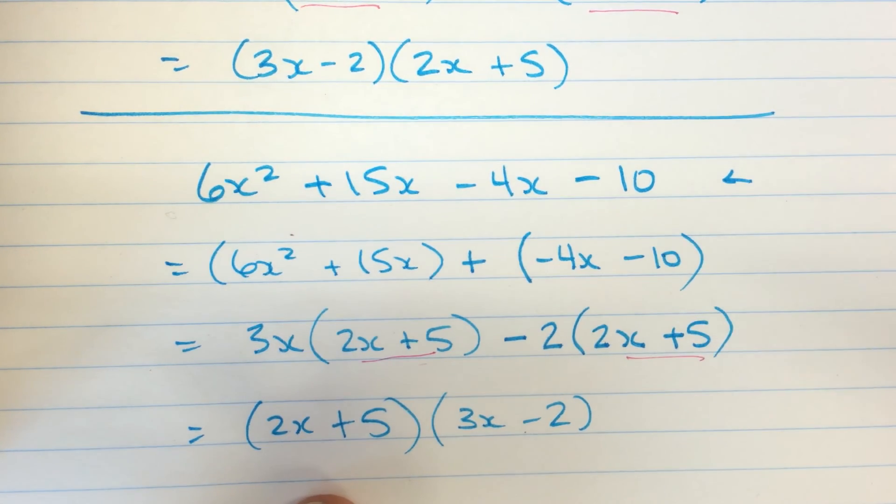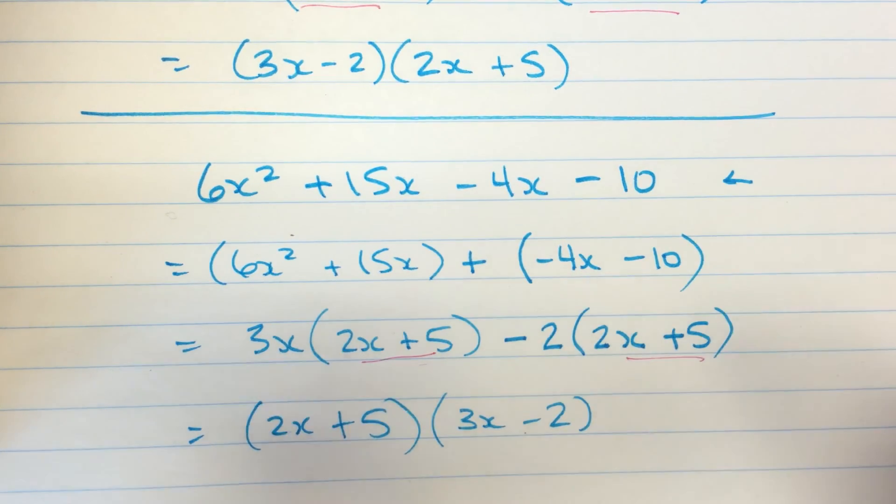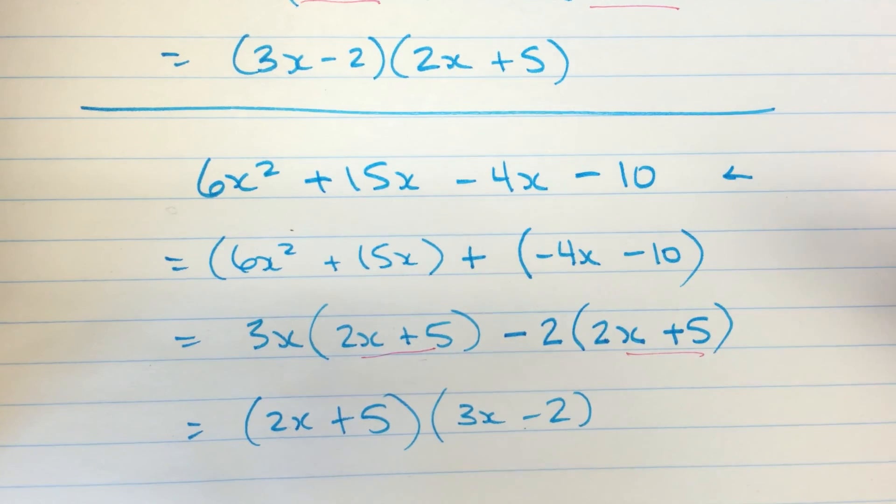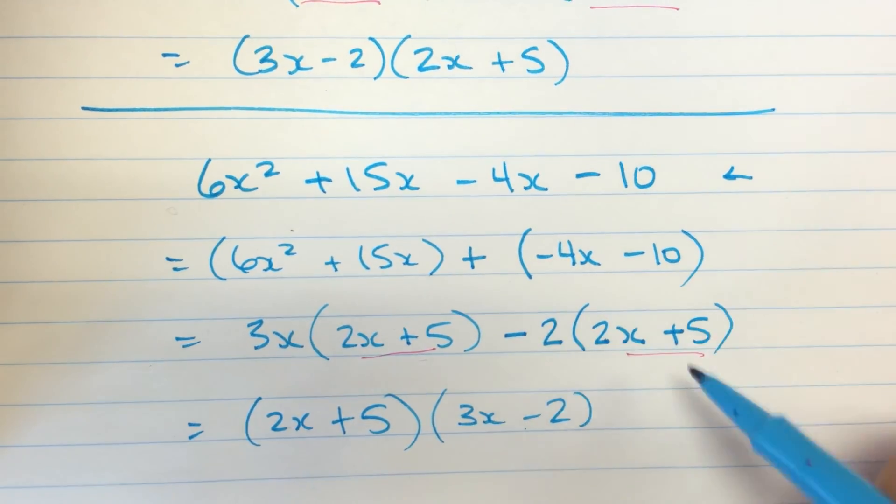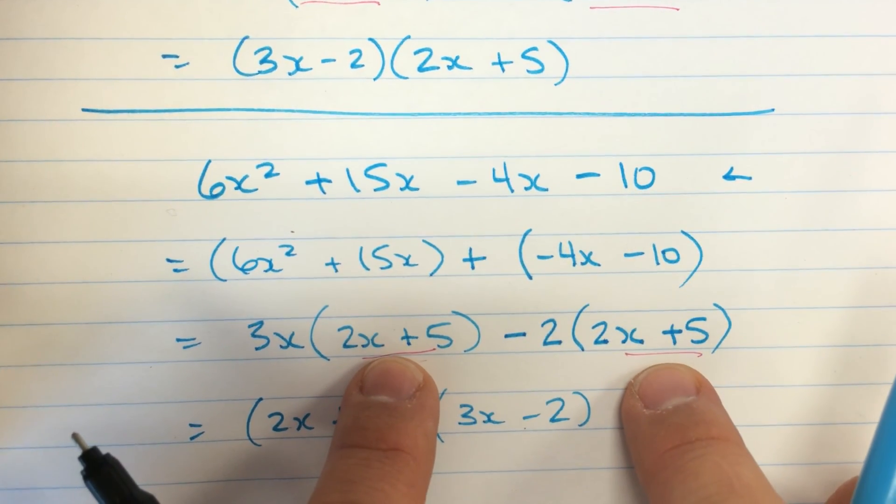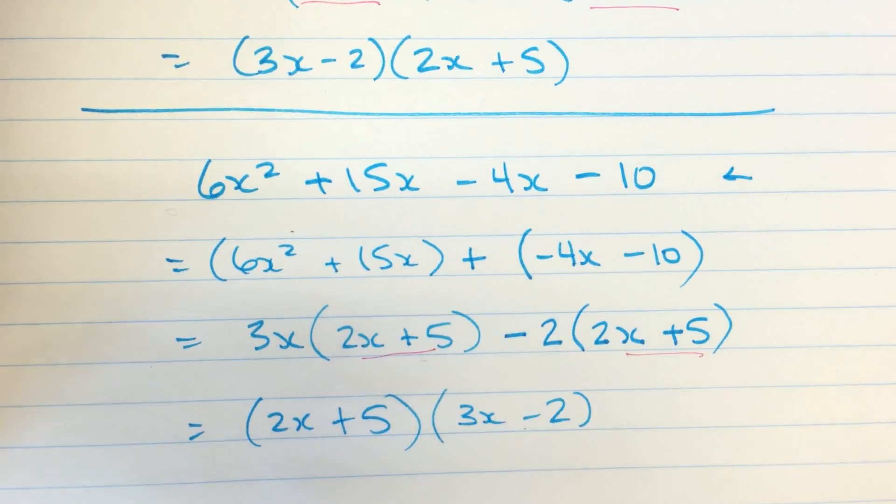Okay, so that's factoring a binomial as a common factor. And factoring by grouping, which we still have to use that binomial common factor here to be able to finish. Okay, I hope that helps and let me know if you have any questions.